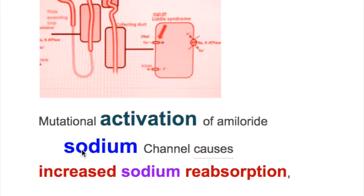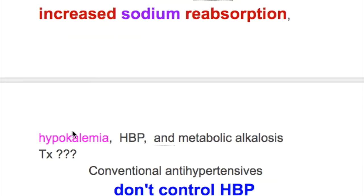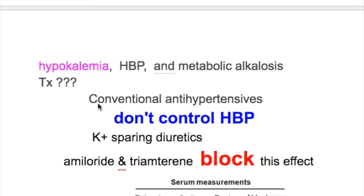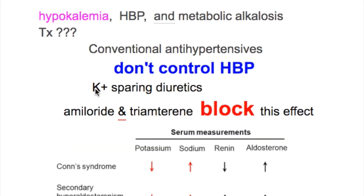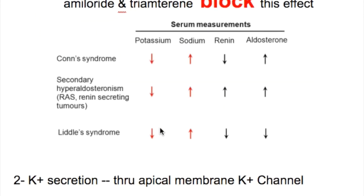Liddle syndrome is a mutational activation of the amiloride-sensitive sodium channel (ENaC), causing increased sodium reabsorption, hypokalemia, hypertension, and metabolic alkalosis. Conventional antihypertensive drugs do not control the blood pressure. The potassium-sparing diuretics amiloride and triamterene block this effect.